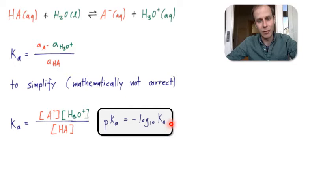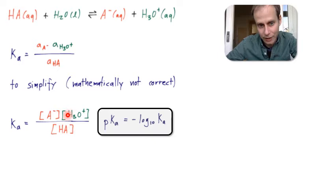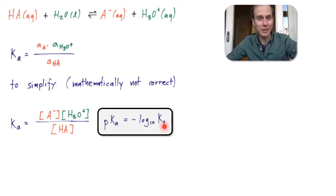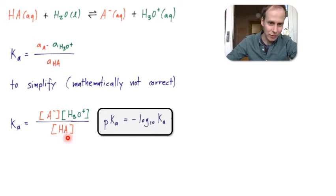Here's why this step is not exactly correct: in order to take a logarithm of a number, that number should not have any physical units. However, when I write the equilibrium constant using concentrations rather than activities, it has physical units — namely moles per liter — because only two of the moles-per-liter terms cancel out. It's not okay to take a logarithm of a number with units. In fact, the activities-based expression is unitless, so we use that properly — but for simplicity we proceed this way, so please forgive me.